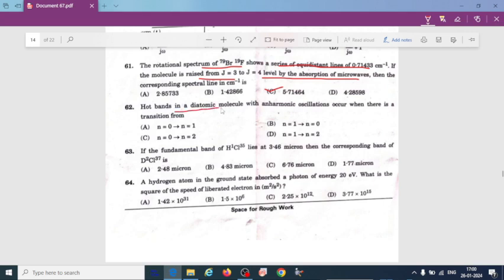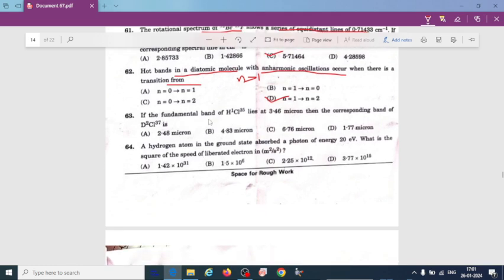Hot bands in a diatomic molecule with anharmonic oscillator occur when there is a transition from - actually for hot band, n must be greater than 1. So actually in the previous video, I have to make that option D, n is equal to 1 to n equal to 2. The fundamental band of hydrogen chloride lies at 3.46 microns. Then the corresponding band of D2 chlorine is 2.48 microns.